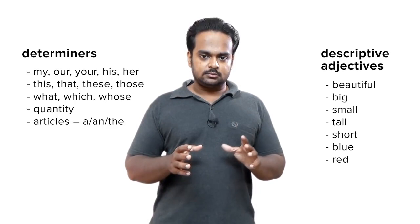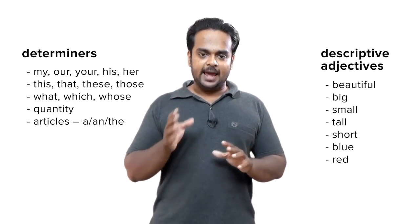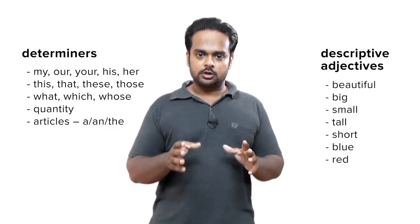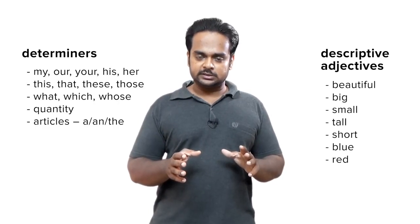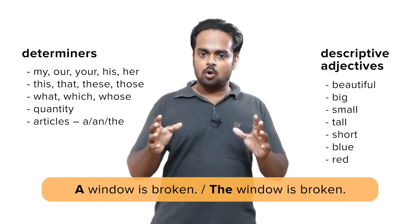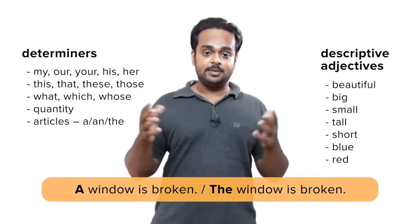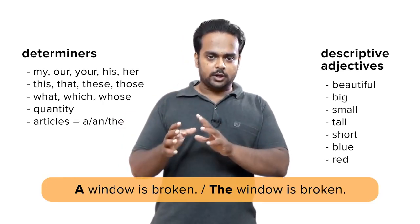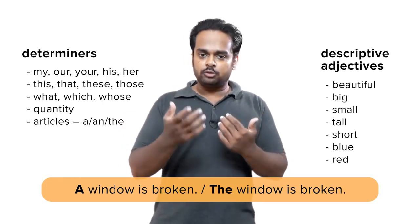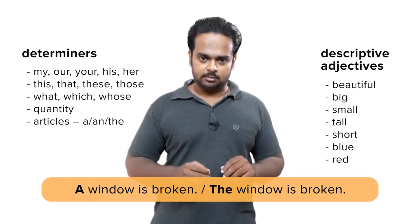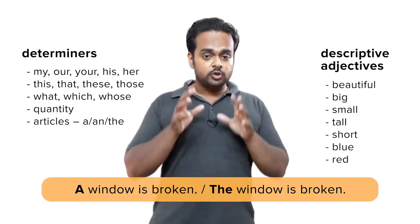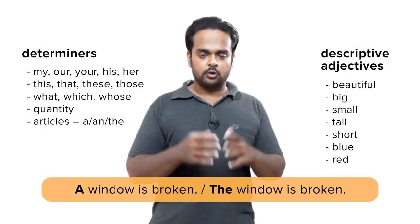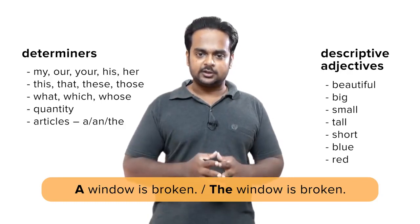And finally, articles — that is, the words a, an, and the — are also considered adjectives, because if I said 'a window is broken,' it could be any window. But if I said 'the window is broken,' we both know which window I'm talking about. So articles give us information about nouns and so they're also adjectives.